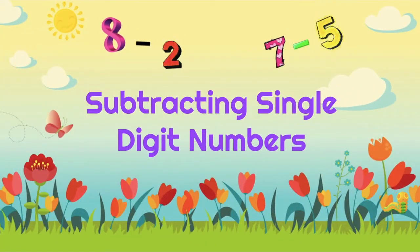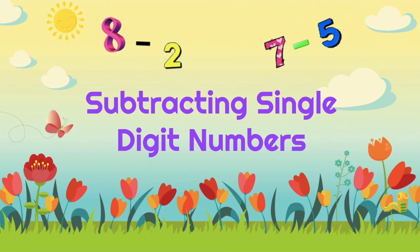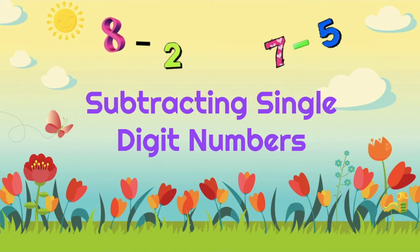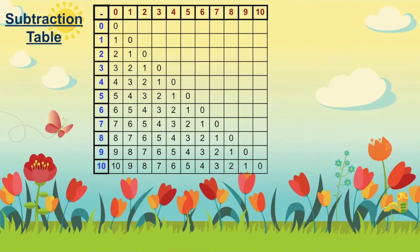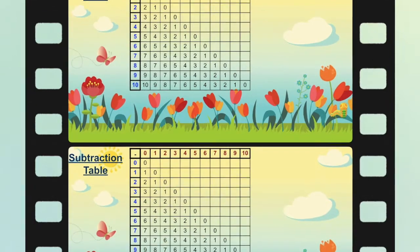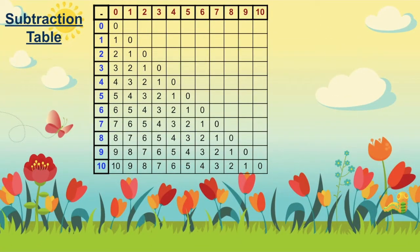After going through the basic facts about subtraction, let's now have a closer look at how to subtract single digit numbers. In solving a subtraction, we can do it manually, or we can use a subtraction table. This, learners, is what we call a subtraction table. It is used to get an answer for some basic subtraction equations. The numbers in the first column represent the minuend, while the numbers in the first row serve as the subtrahend.